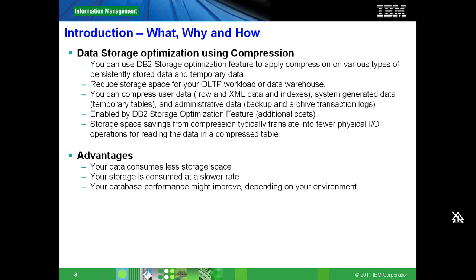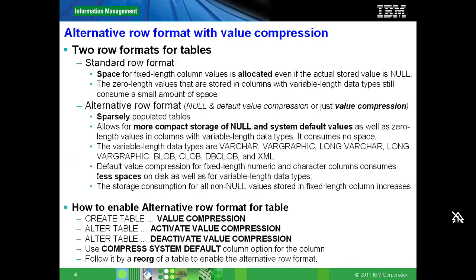Before compression, we always have two formats of rows in DB2: one is called the standard row format, the other is the alternative row format. This row format takes care of null values and default values. In the standard row format, null and default values for data types like character, varchar, and date will always consume the full length allocated.